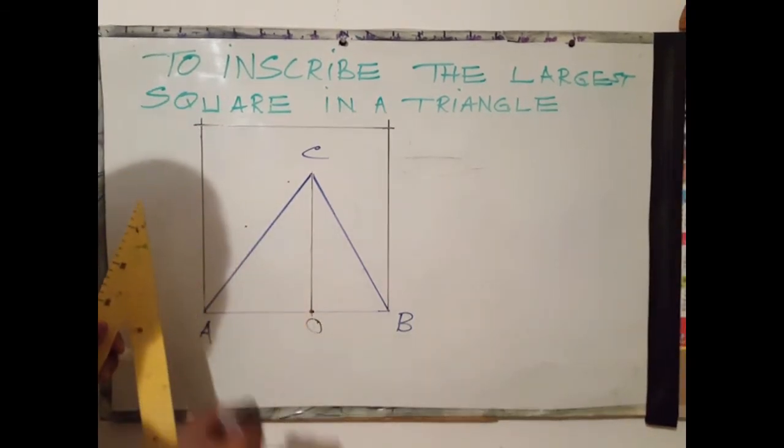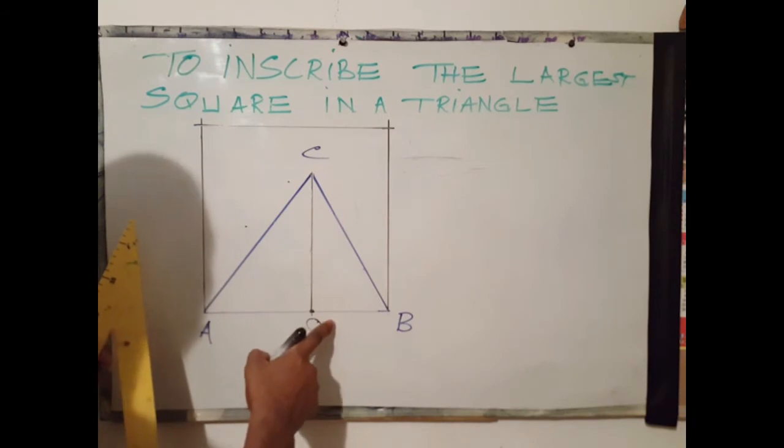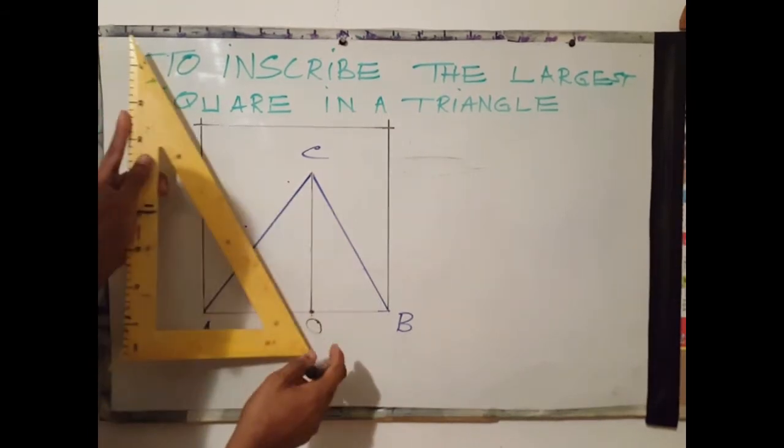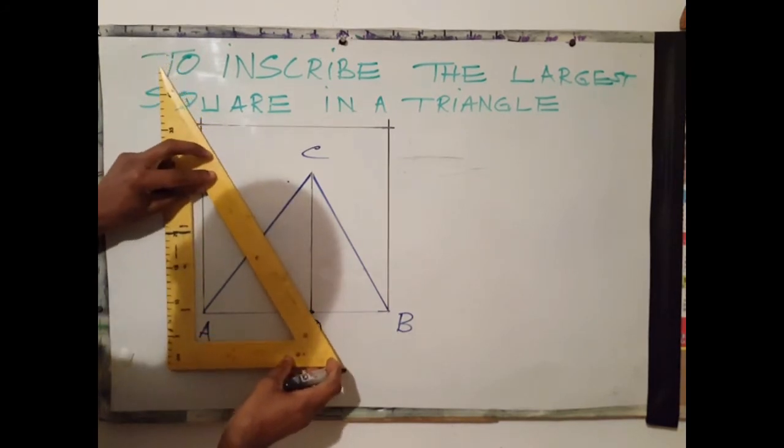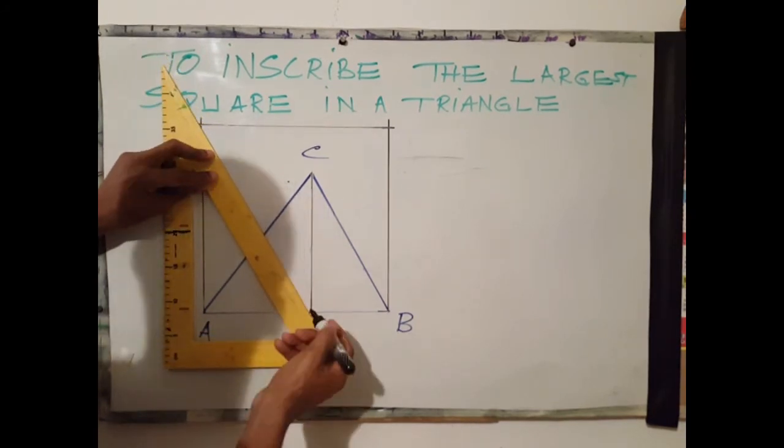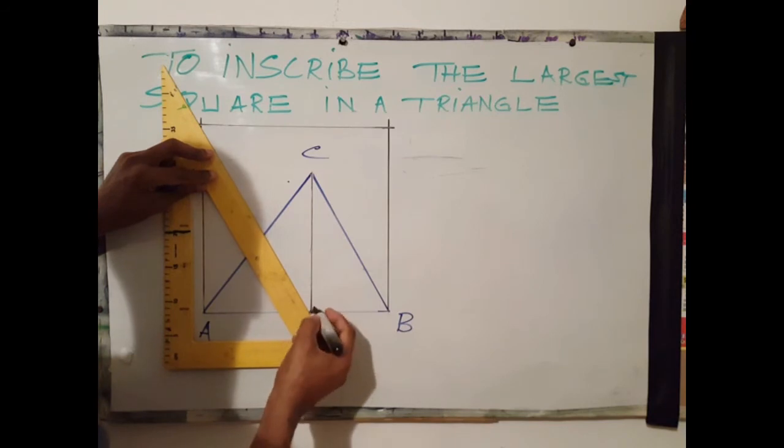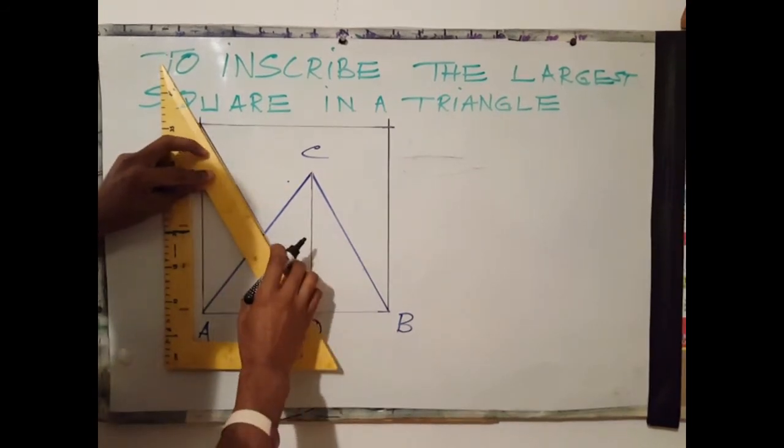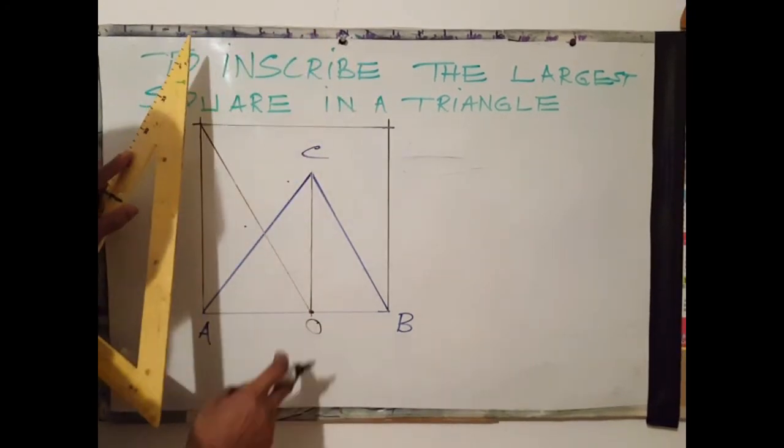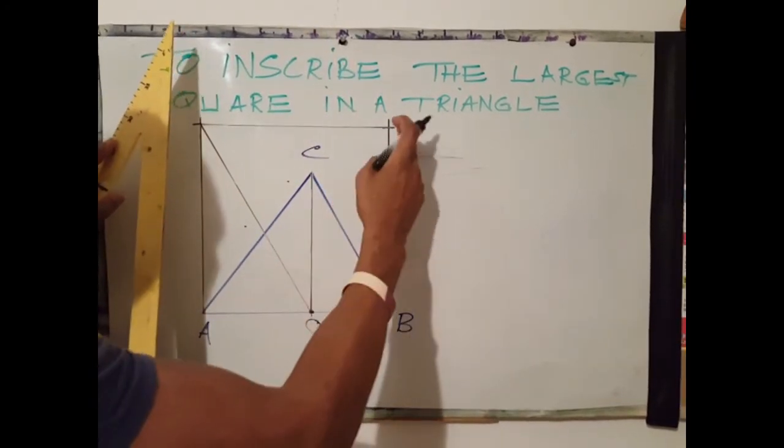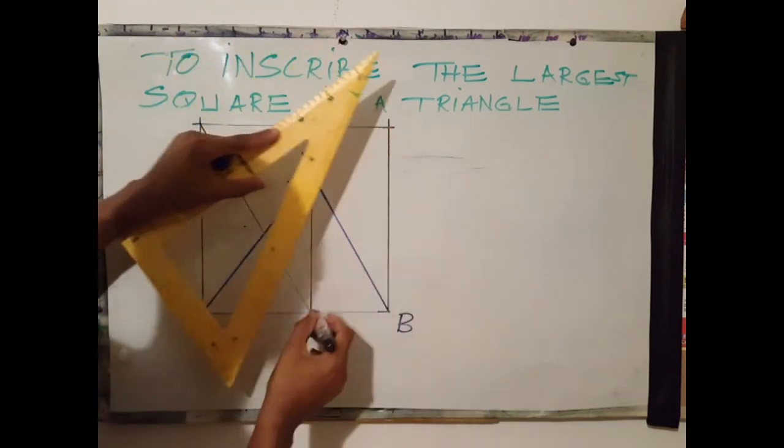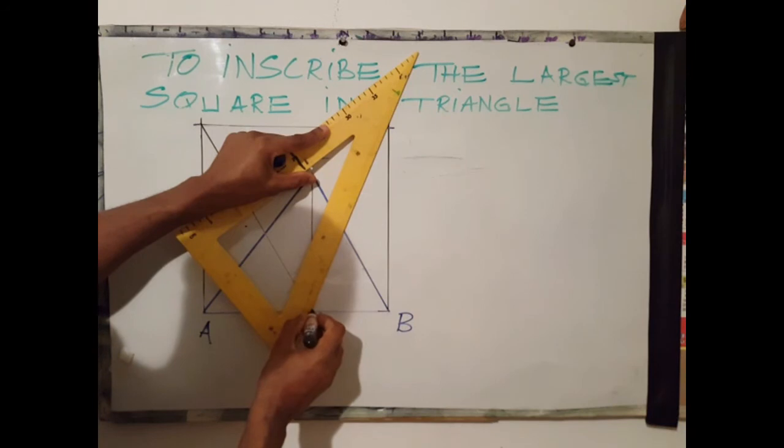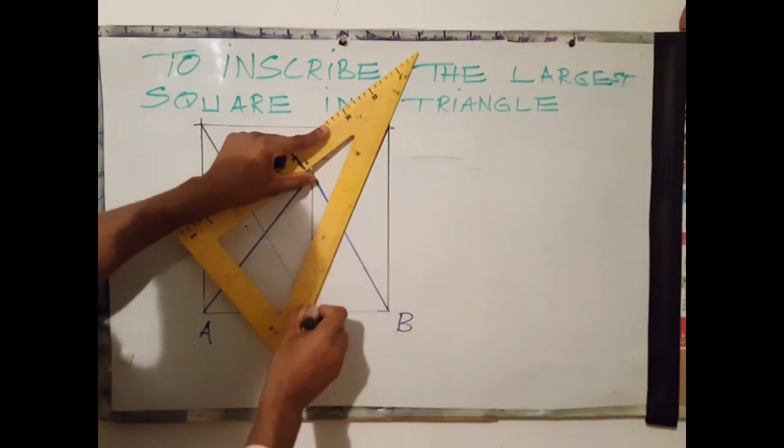The next step is to draw a straight line from O to the upper left corner of the square, and another line from O to the upper right corner of the square.